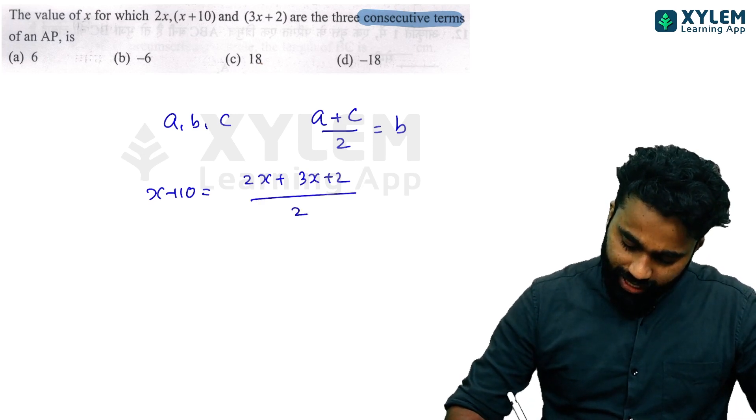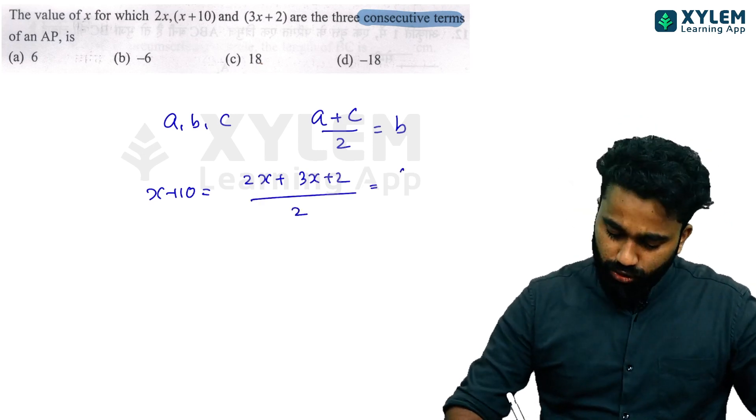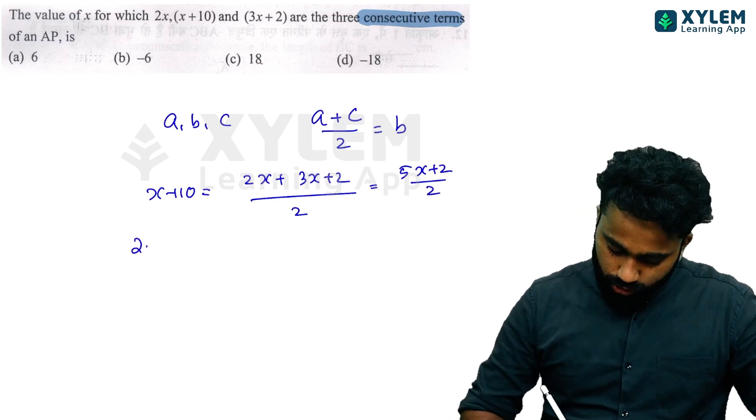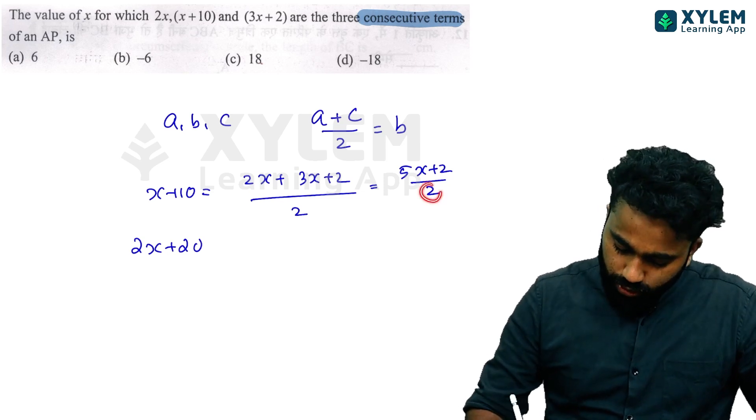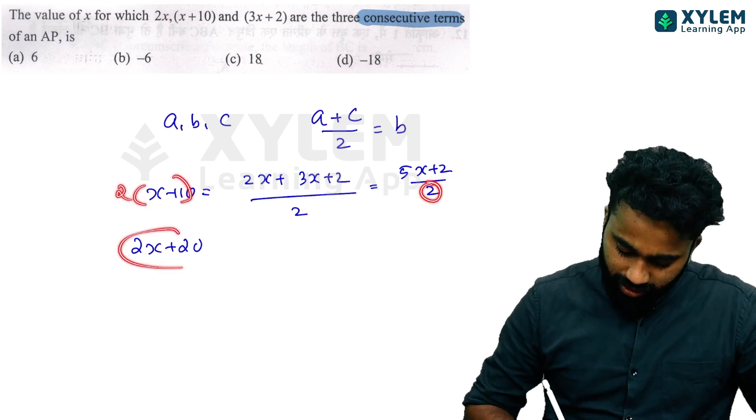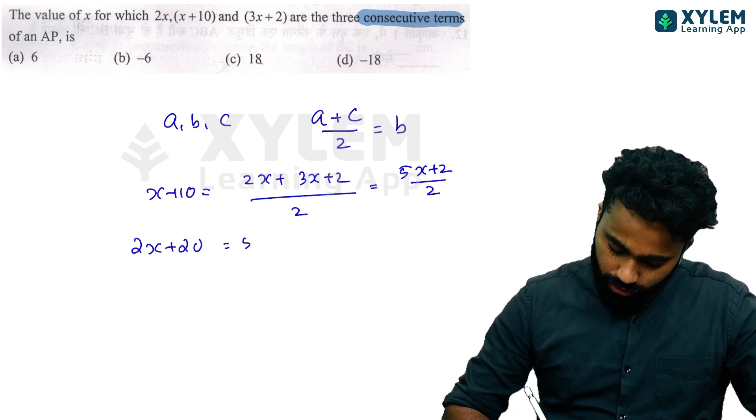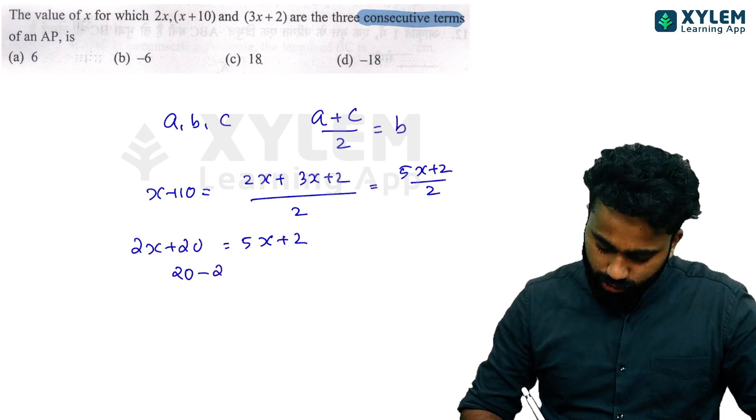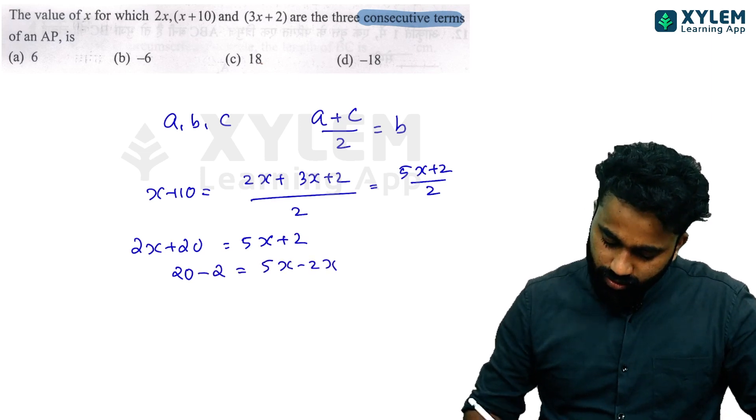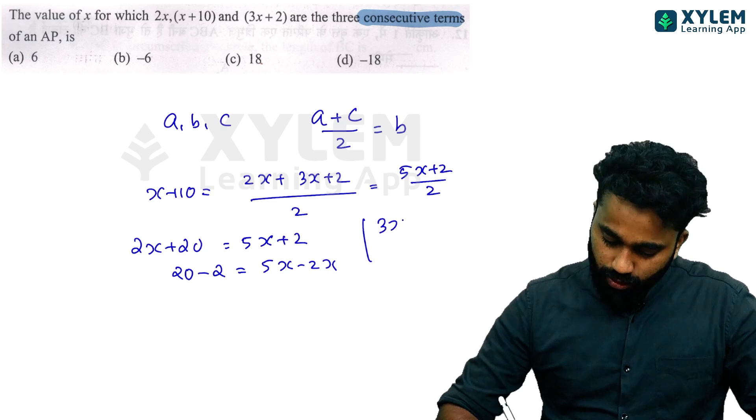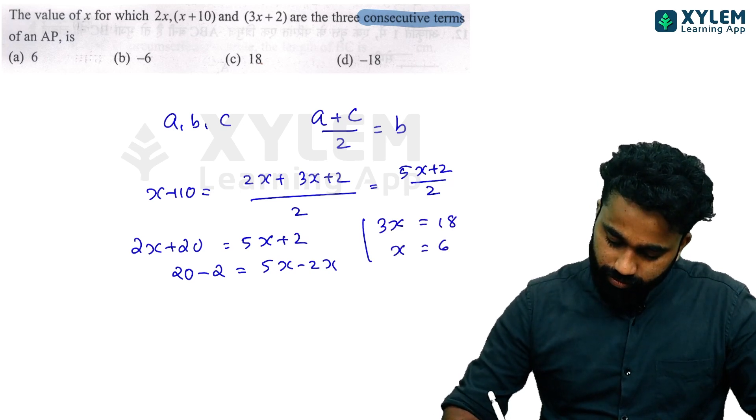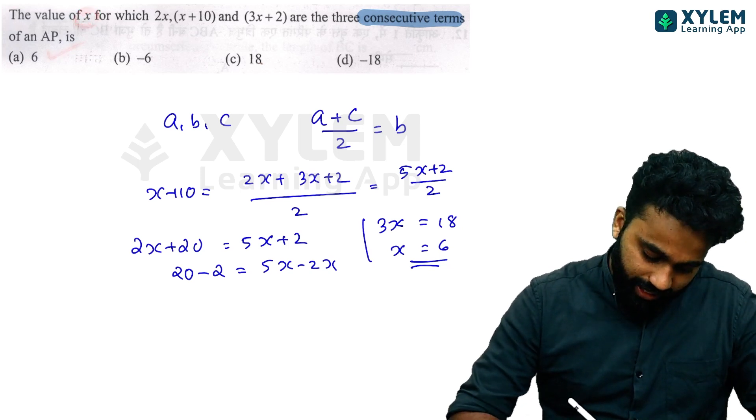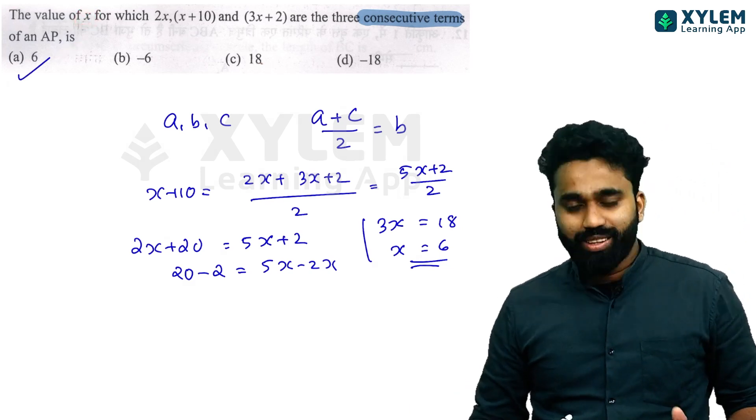So the answer is 2x plus 3x plus 2 divided by 2 equals x plus 10. Therefore, 5x plus 2 equals 2x plus 20. This gives us 5x plus 2 equals 2x plus 20, so 3x equals 18, and x equals 6.